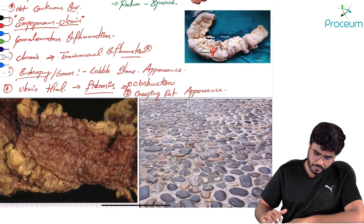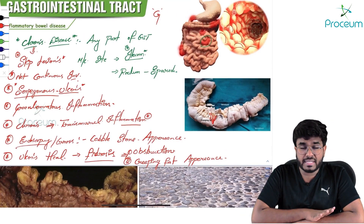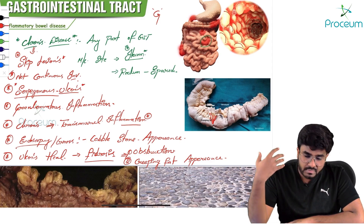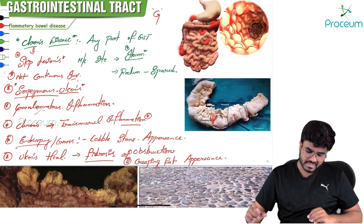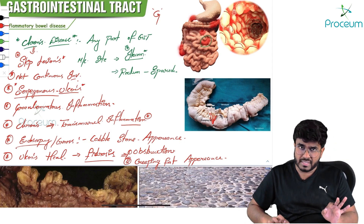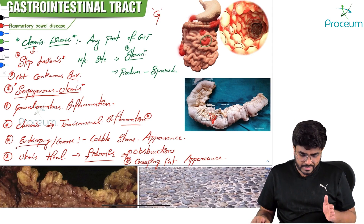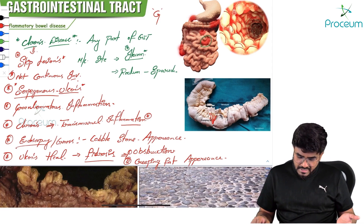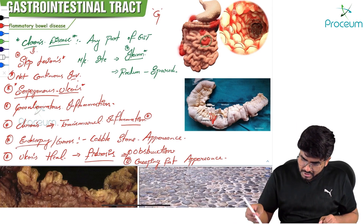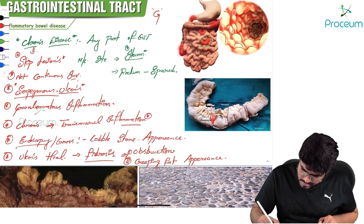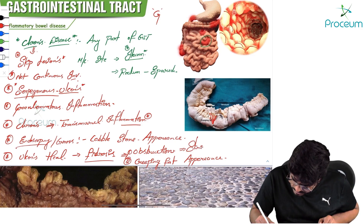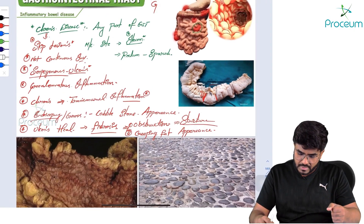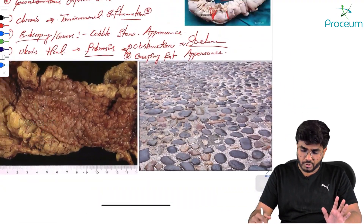So, in Crohn's disease: any part of the GIT can be affected but rectum is usually spared; most commonly affected segment is the ileum; it is not a continuous involvement — skip lesions with serpigenous ulcers; it is a granulomatous and transmural inflammation; cobblestone appearance and creeping fat appearance are seen; and fibrosis can lead to obstruction or stricture formation.